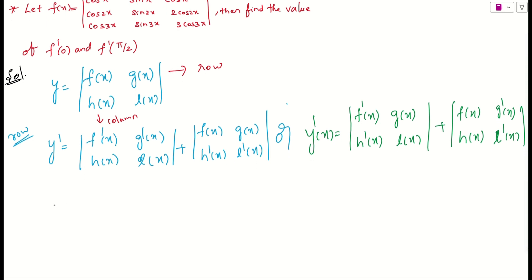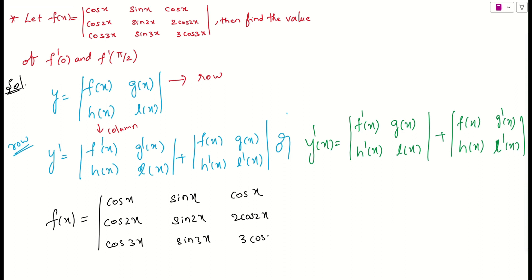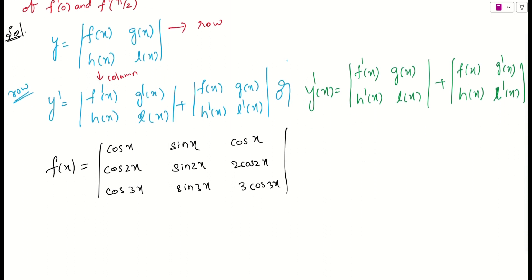Now let us move on to the actual question. The matrix given is: first row [cos x, sin x, cos x], second row [cos 2x, sin 2x, 2·cos 2x], and third row [cos 3x, sin 3x, 3·cos 3x]. If I check this problem, I can see that column 2 and column 3 have a pattern, so I will prefer the column method here.